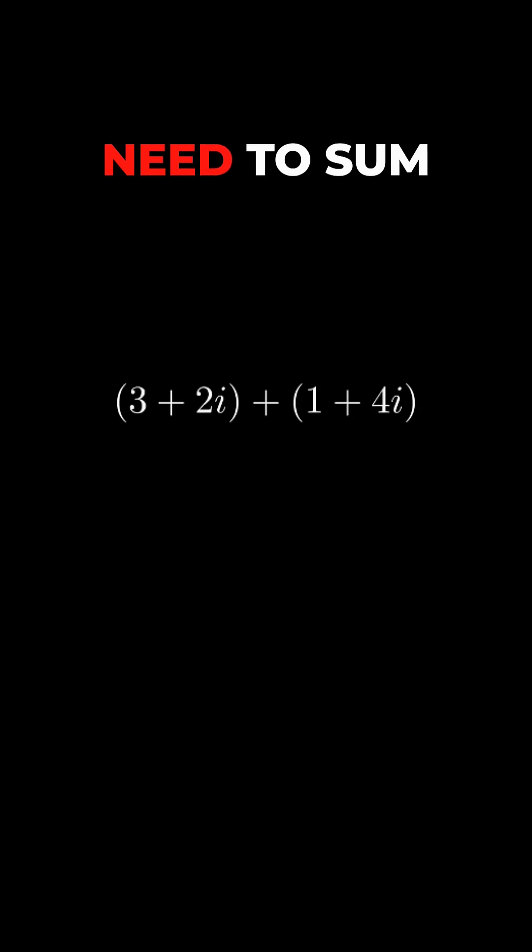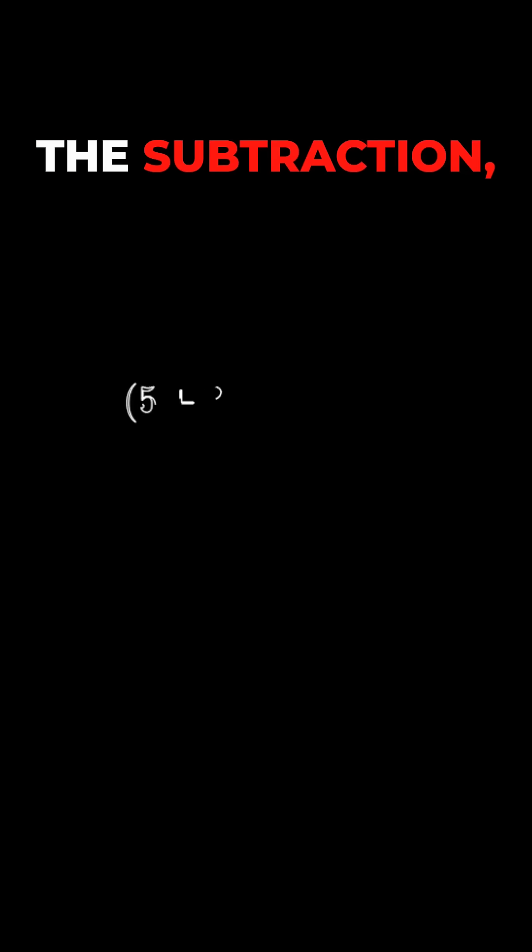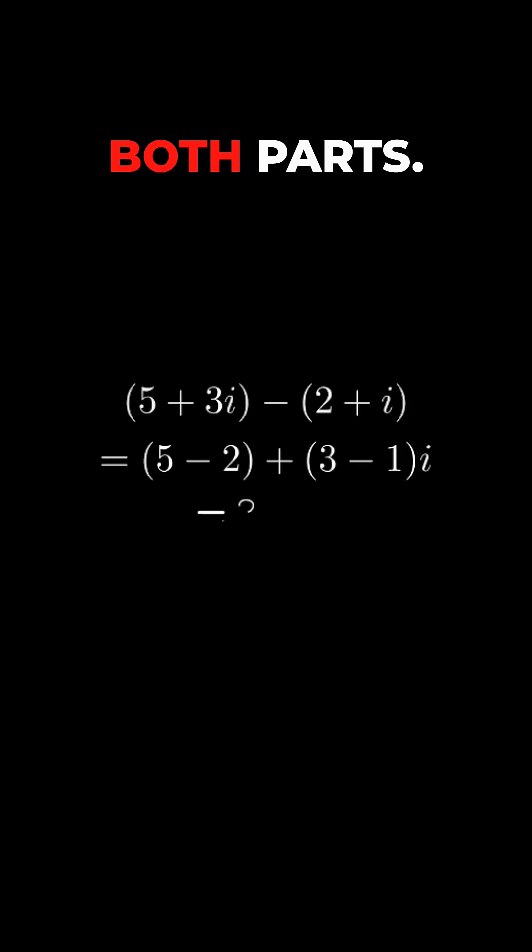To add these numbers together we need to sum the regular and irregular parts separately to get a full solution. For the subtraction the same thing, but we subtract both parts.